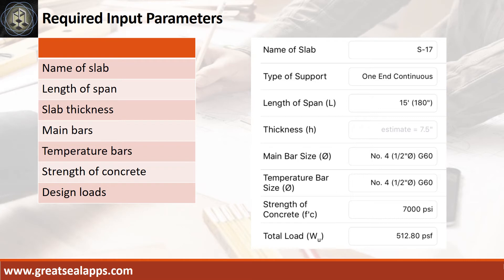Enumerate input parameters required: name of slab, S17; type of support, 1 end continuous; length of span, 15 feet; slab thickness, 7.5 inches; main bars and temperature bars, 1/2 inch diameter, grade 60; strength of concrete, 7,000 PSI; and total load, 512.8 PSF.